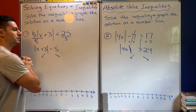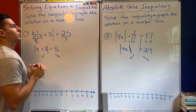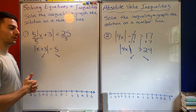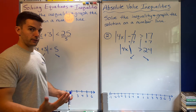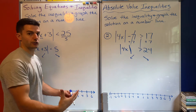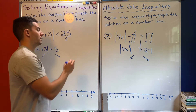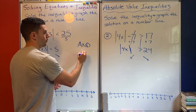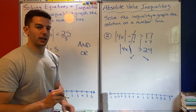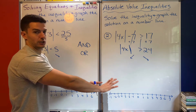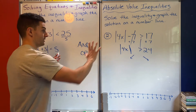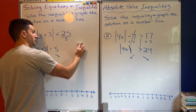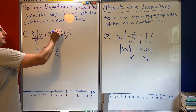This is where I want to explain something about solutions. The next video is on compound inequalities, and this relates to that. When we have absolute value inequalities, there are two possibilities for the solutions: we can have an 'and' inequality solution, or we can have an 'or' inequality solution. We can tell which one it's going to be right at the beginning, because it depends on what the inequality sign is.